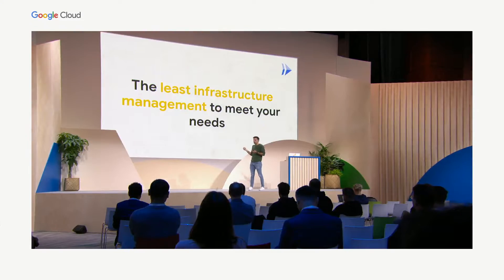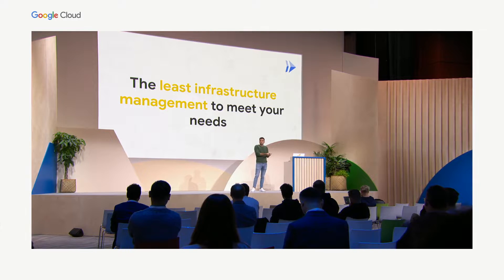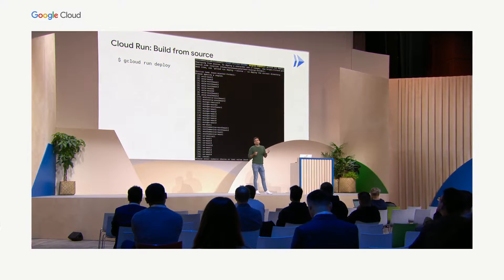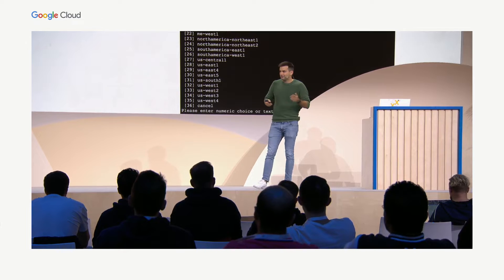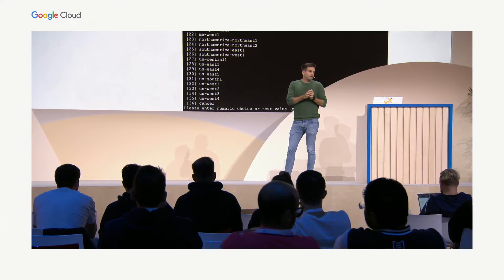For deployment, I'm a lazy developer who always asks: what is the least infrastructure management that meets my needs? Cloud Run is a very good fit. We go into the directory of our code and run the command `gcloud run deploy`. This command interactively asks which APIs to enable — for example, Artifact Registry — and which region to deploy into. We currently have 35 regions, and at this conference we're announcing several more, so you have quite a lot of choice to get your application close to your users.